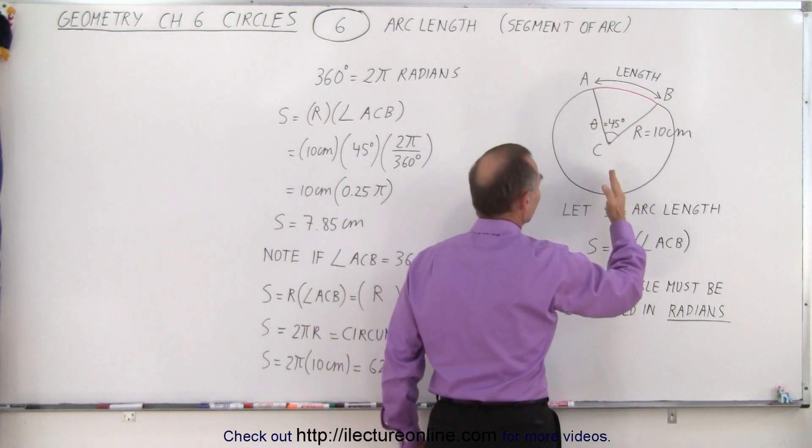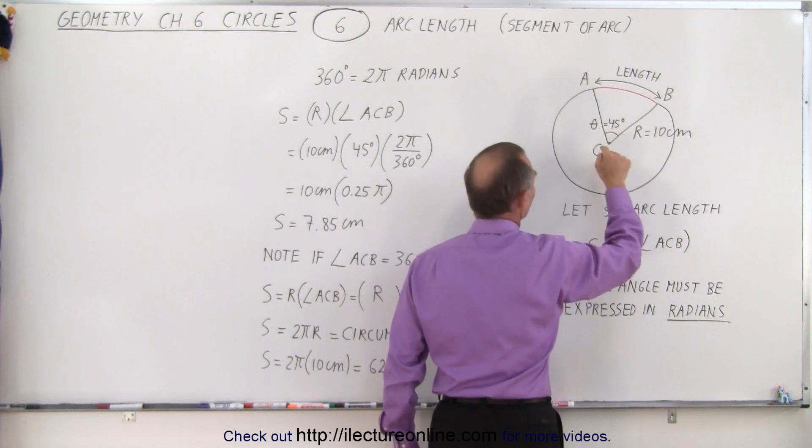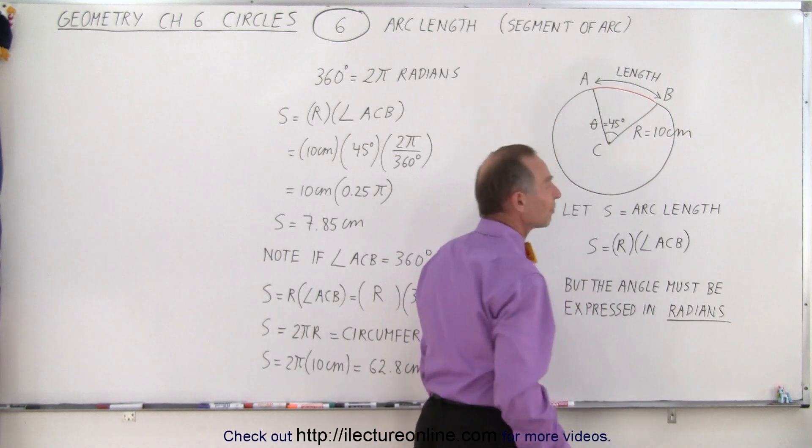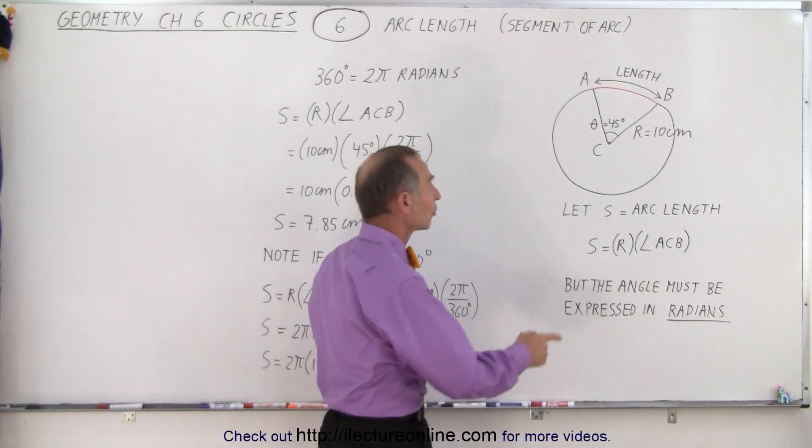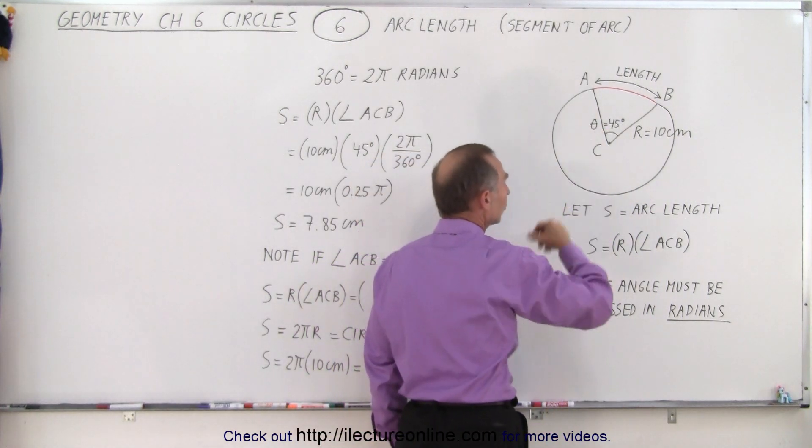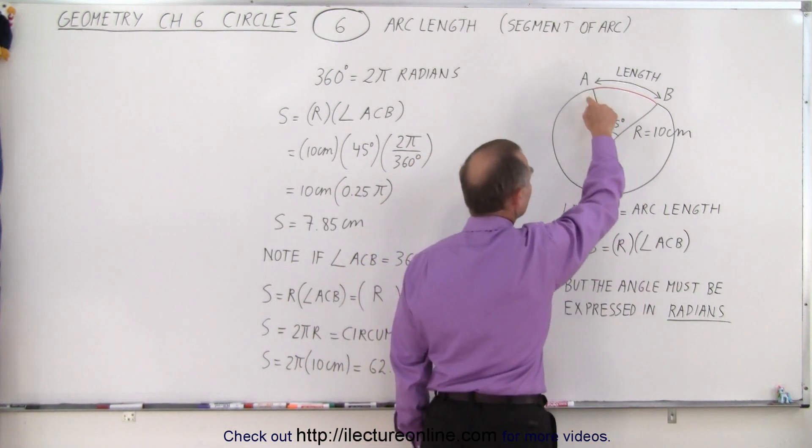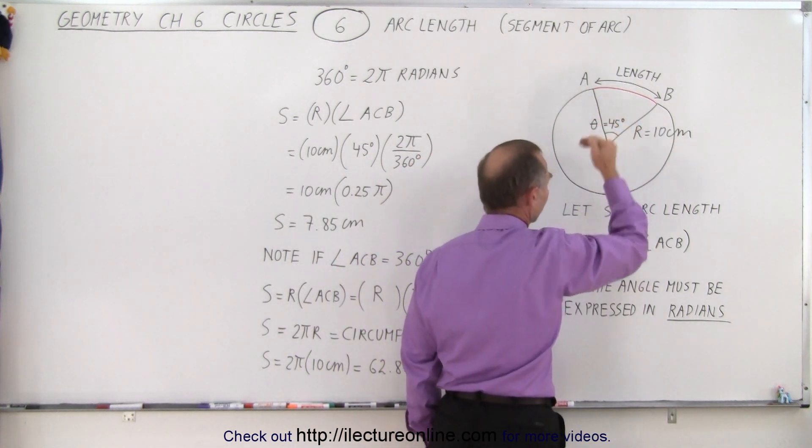We have the circle and let's say we draw two lines from C to A and from C to B and the angle between them, let's say it's 45 degrees. Sometimes we use Greek letter symbols to indicate angles. Of course, in geometry, we'll indicate that it's the angle from A to C to B. So it's this angle right here.